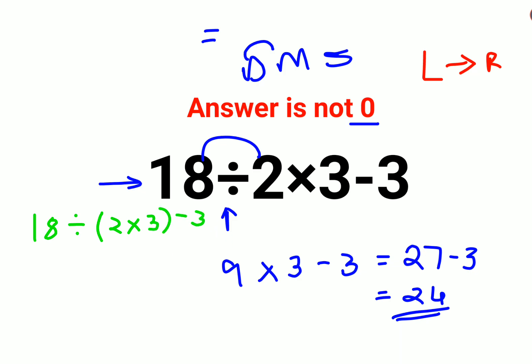So now when you have something like this, 18, we need to do BODMAS or PEMDAS, whatever you follow, you need to always do the brackets first. So that will be what? 2 times 3, that is 6 minus 3. So now 18 divided by 6 is 3 minus 3 gets you a 0.